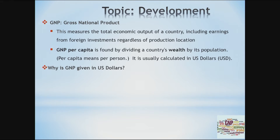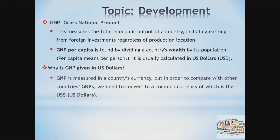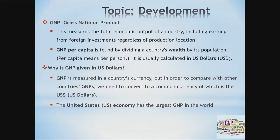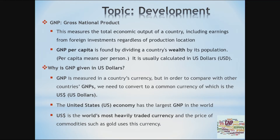Why is GNP then given in US dollars? GNP is measured in a country's currency first of all. But in order to compare with other countries' GNPs, we need to convert to a common currency, of which we use the US dollar. The United States economy has the largest GNP in the world — that's one reason. Another reason is that the US dollar is the world's most heavily traded currency, and the price of commodities such as gold uses this currency.